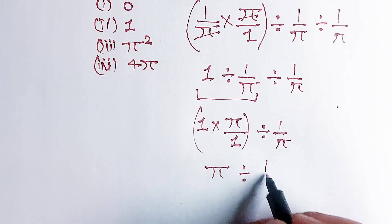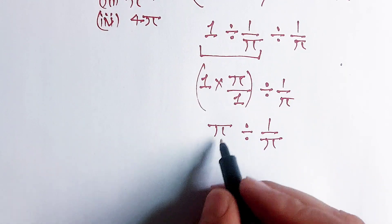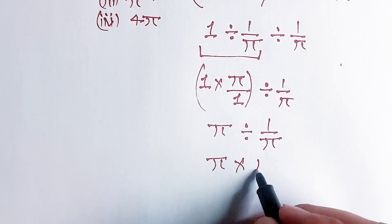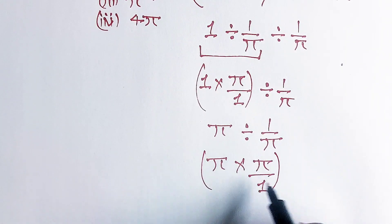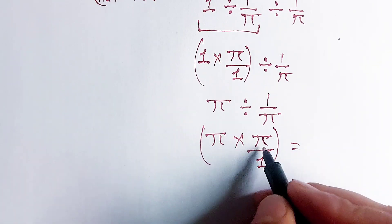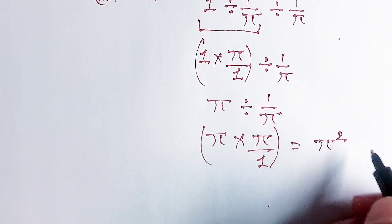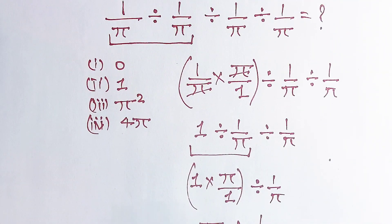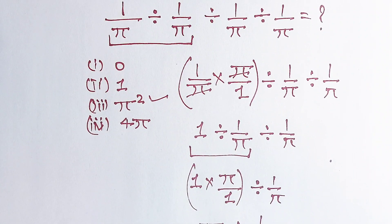Now solving this term: it equals π divided by 1 over π, which can be written as π multiplied by π over 1. This equals π multiplied by π, which equals π squared. That is our final answer — option 2.